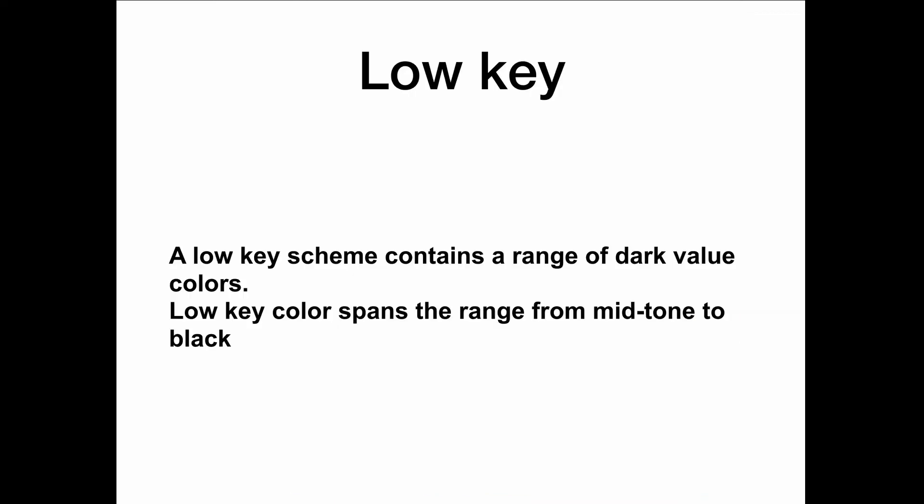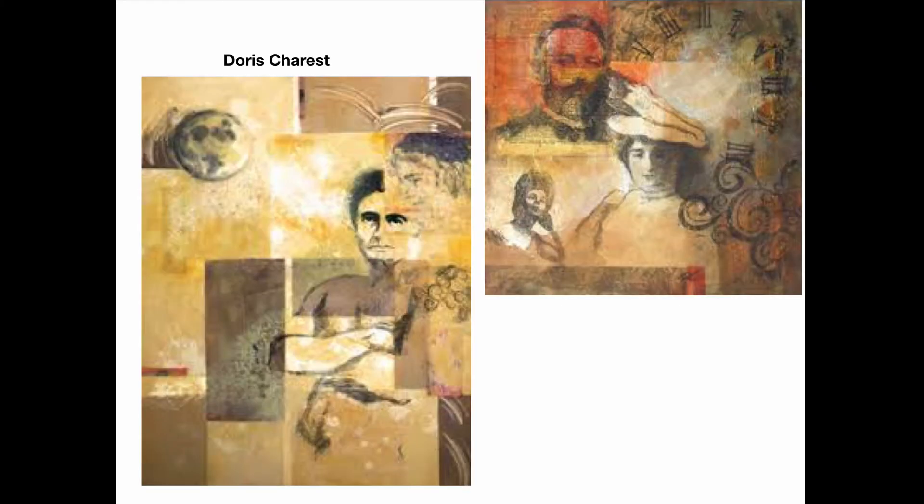Low key colors contain a range of dark value colors. Low key ranges from mid-tone to black. So these are low key colors — I've included darks and I've added black and grays to my color. This is also a low key painting because there's almost no white added to the color. Mostly dark is added to the color.